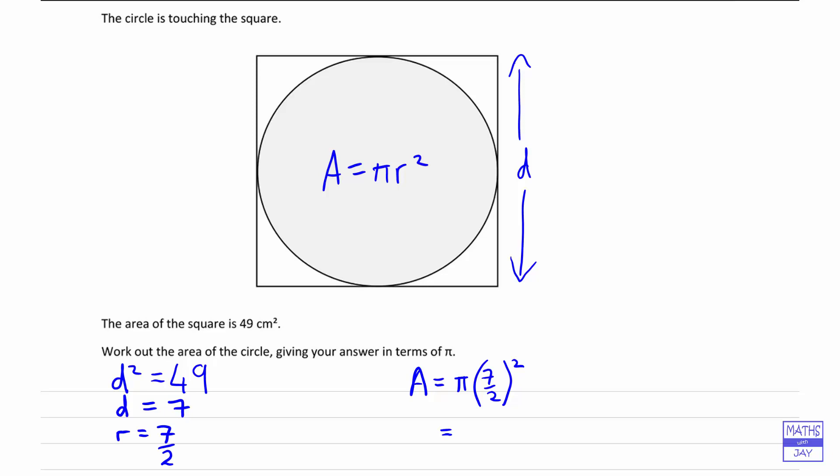So it's going to be better to write down the 7 over 2 squared first, and then put the pi afterwards. We normally write a number followed by a letter. So we've got 7 squared, so that's 49. And 2 squared is 4, and that multiplies pi. And the units for that are centimetres squared.